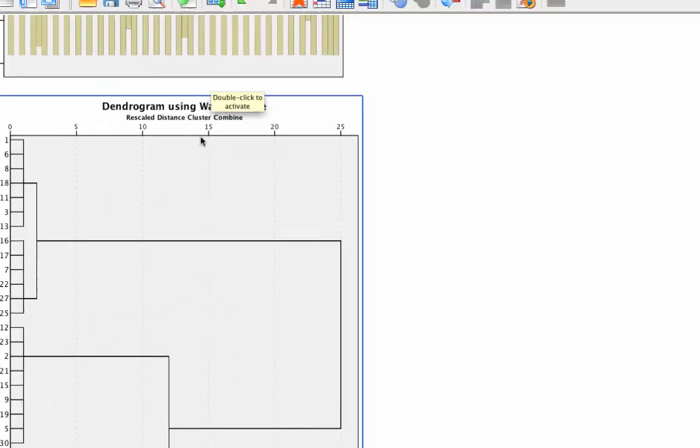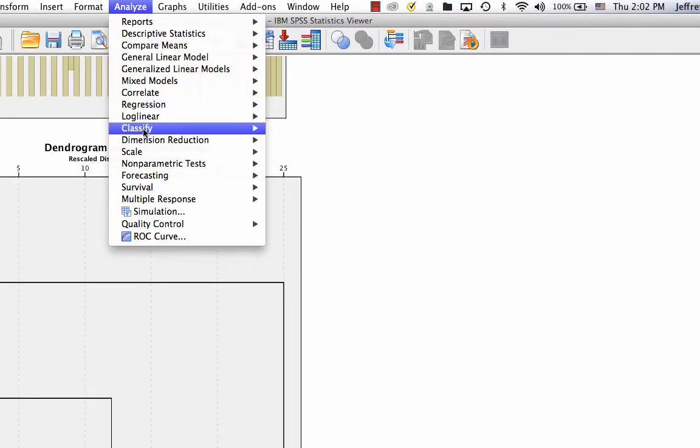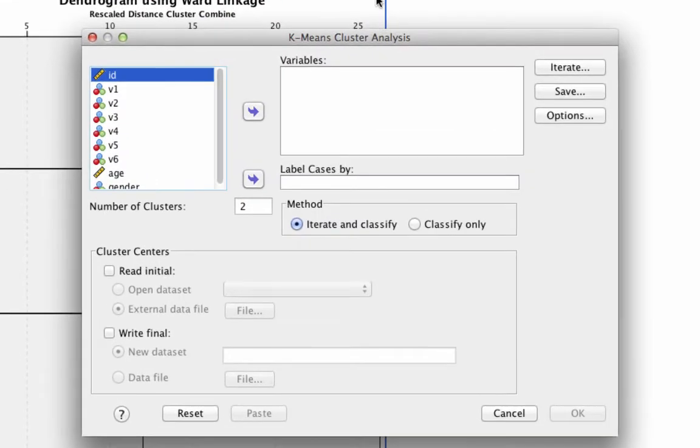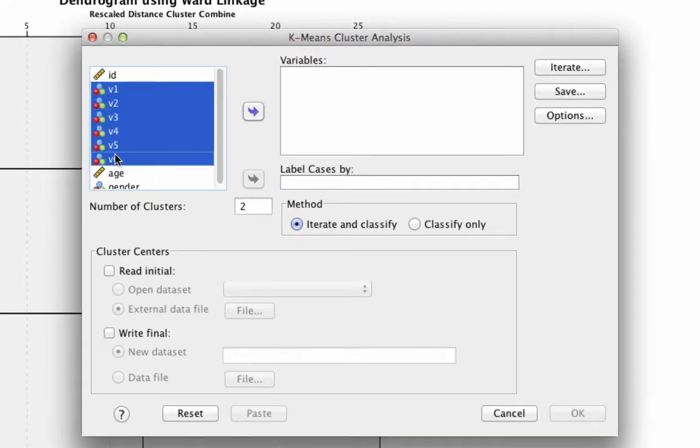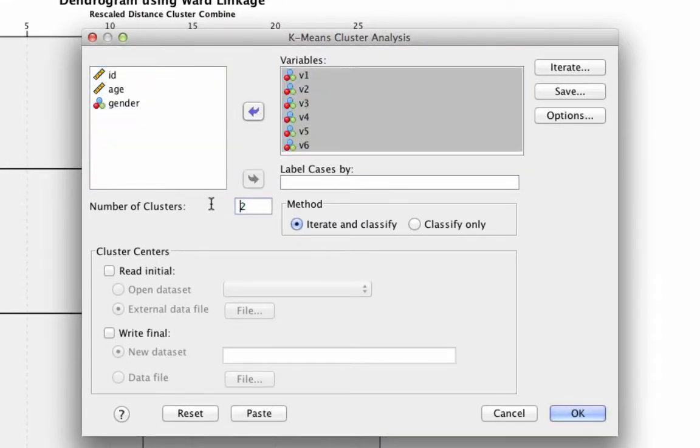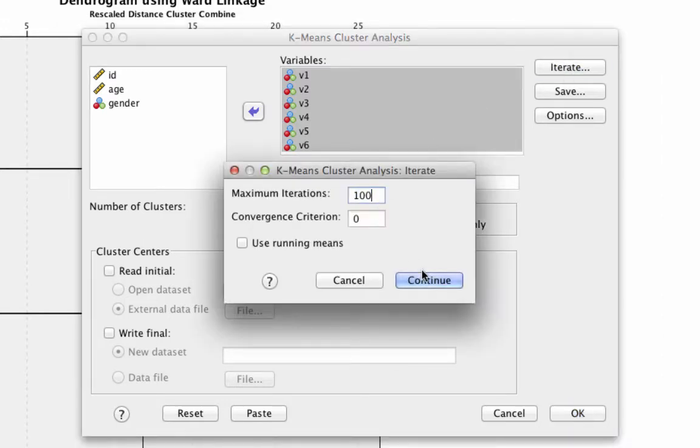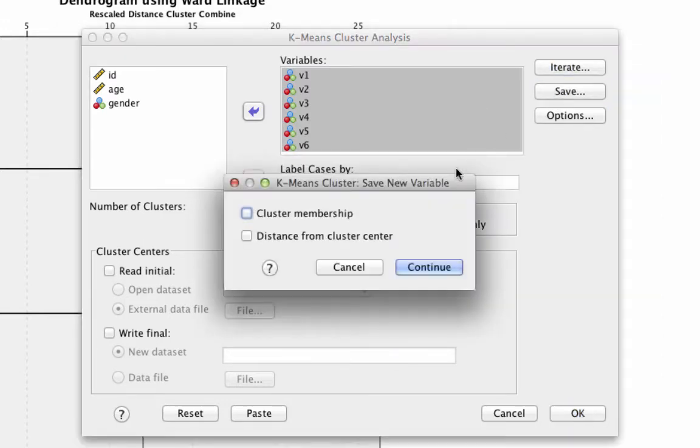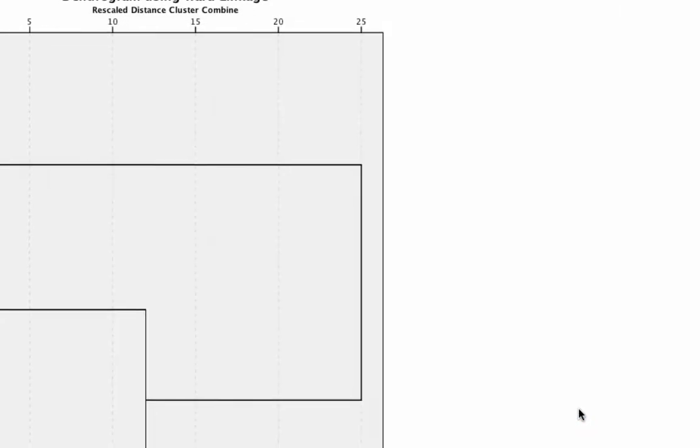Now that we know that we have three clusters we go to analyze, classify, k means. We include the exact same six variables. We say that we want three clusters. We're going to iterate a lot so a hundred times. And we're going to save the cluster memberships. And so we run this.